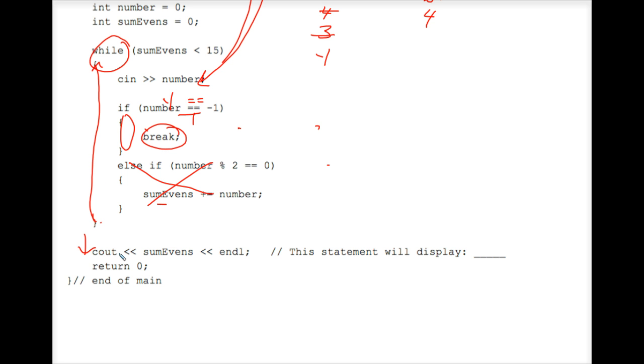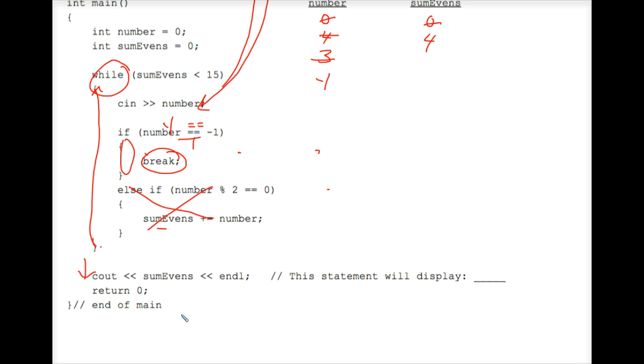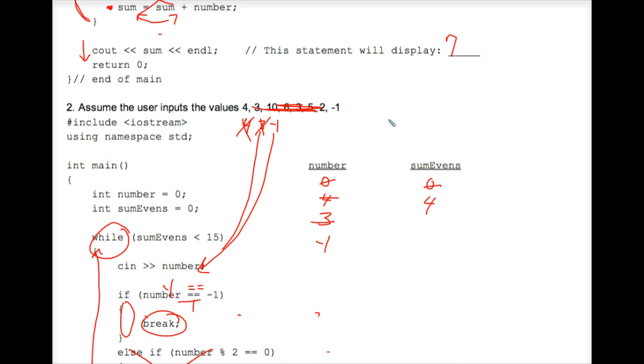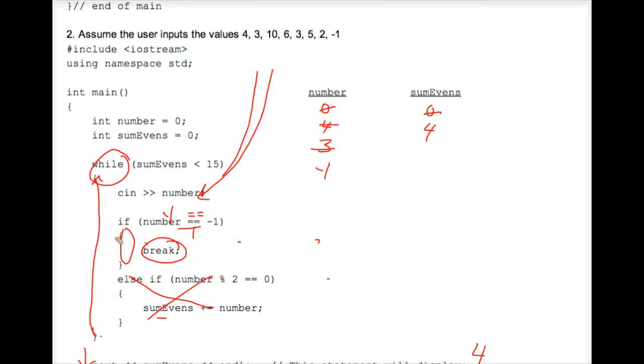All that's left to do is to cout sumEvens. sumEvens is currently 4. So for the worksheet, I would put a 4 there. However, do note that this is not the answer on the worksheet, because you must redo this exercise using all of these numbers. Trust me that eventually you will hit the break statement, which breaks you out of the loop. And even if the break doesn't break you out of the loop, eventually sumEvens less than 15 will probably end up being false. In fact, maybe it's false before you reach the break. You'll have to trace it to find out.